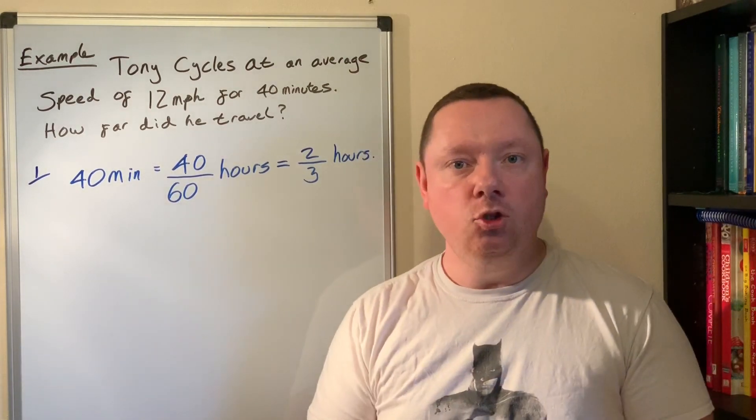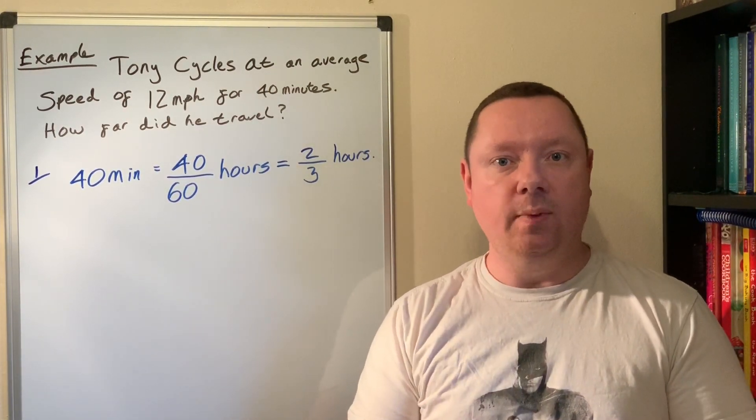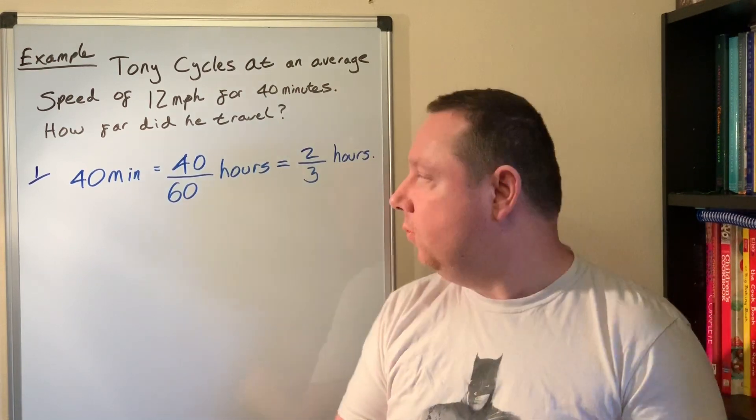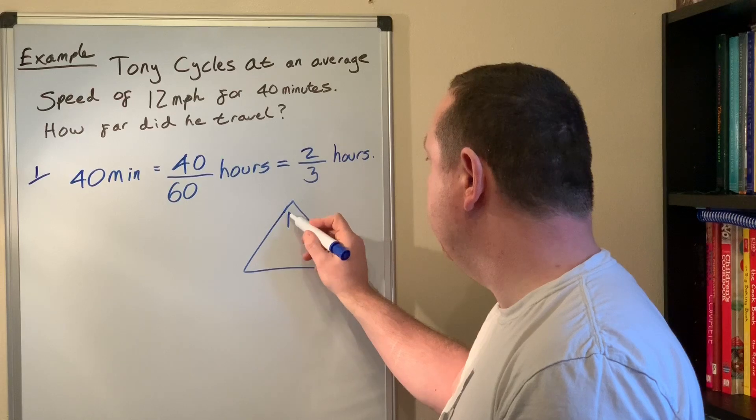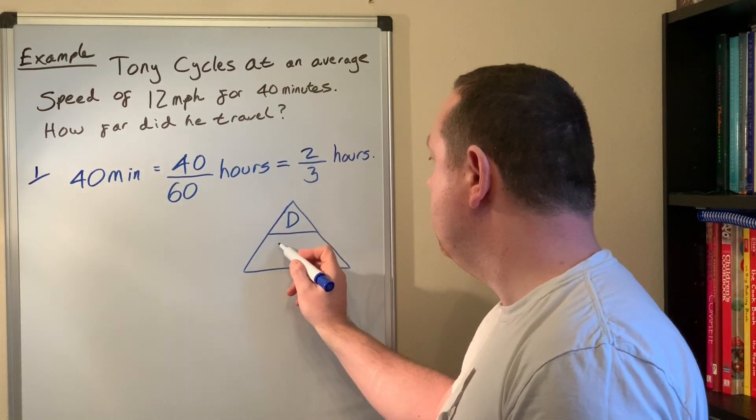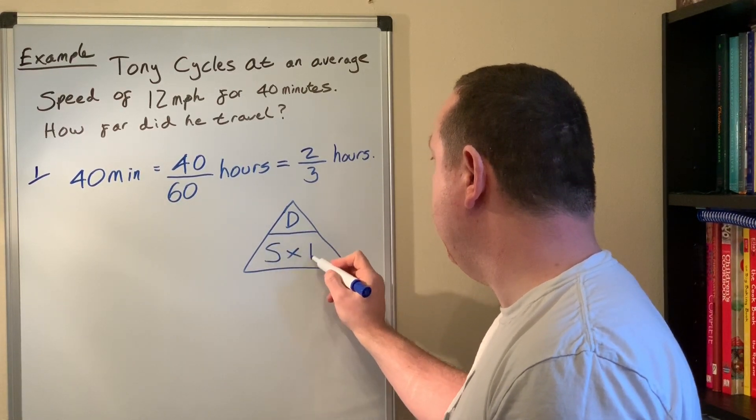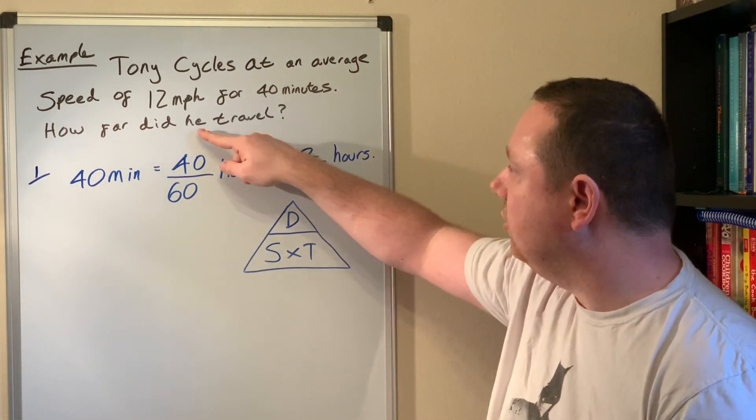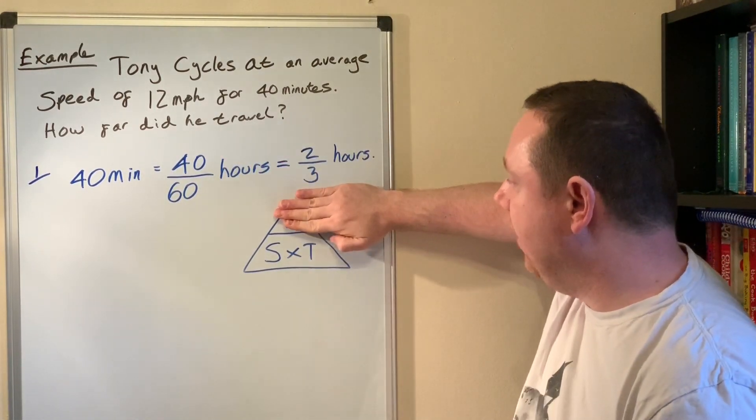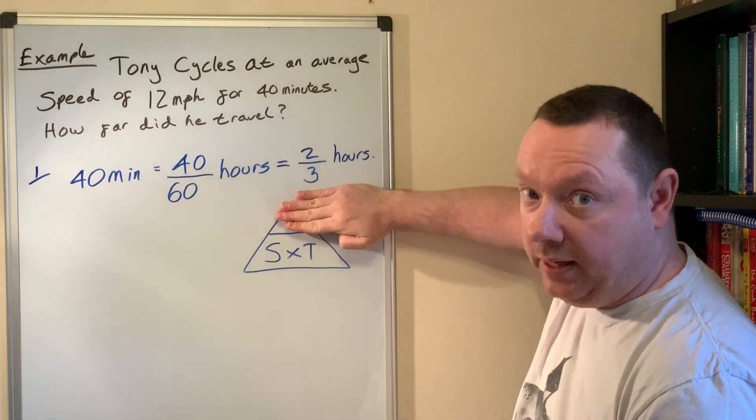Step two is exactly the same as when it's just a standard speed distance time problem. We draw our speed distance time triangle, remember distance at the top over speed times time. I cover up the one I want, distance in this case because it's how far I traveled, so it tells me straight away that distance is speed times time.